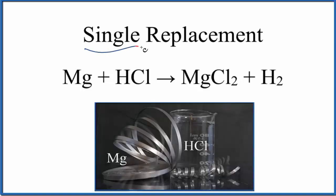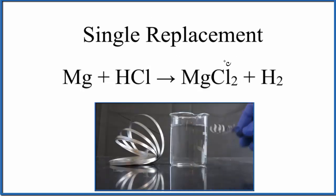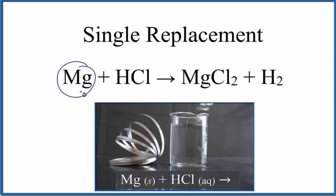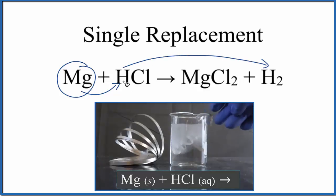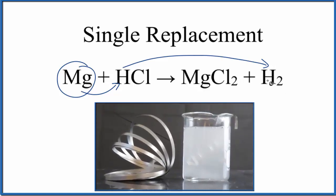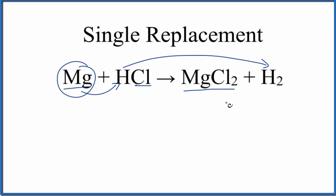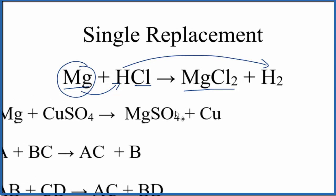Next up is the single replacement reaction, sometimes called a single displacement reaction. With a single replacement reaction, one of the substances pushes the other out, and then it's by itself. So the magnesium pushed the hydrogen out, and now we have just hydrogen by itself — those are the bubbles you see in the reaction. Magnesium is now with the chlorine: magnesium chloride. That's a single displacement reaction.